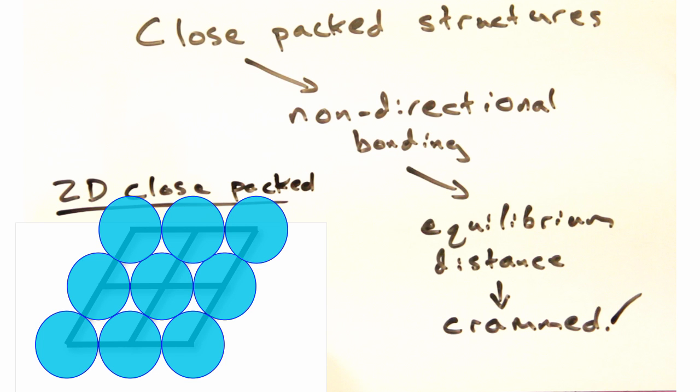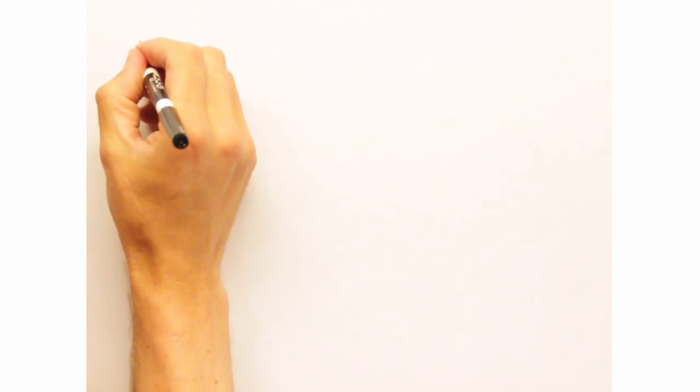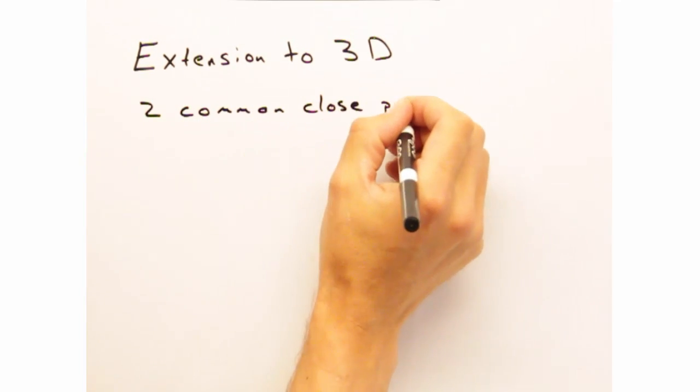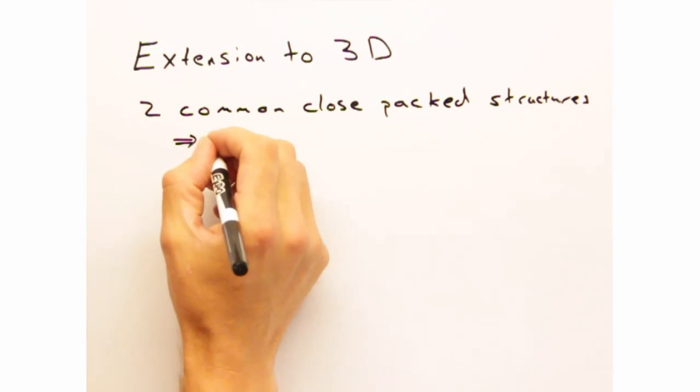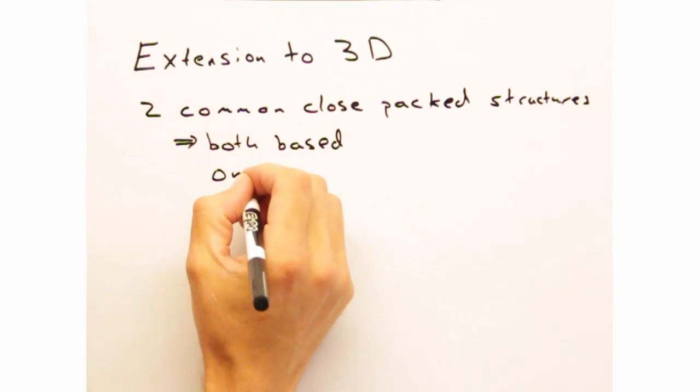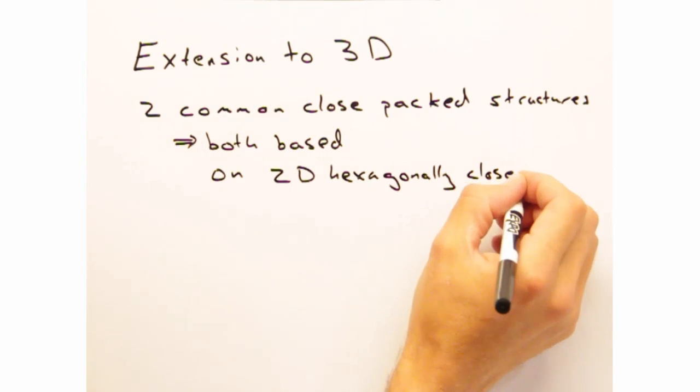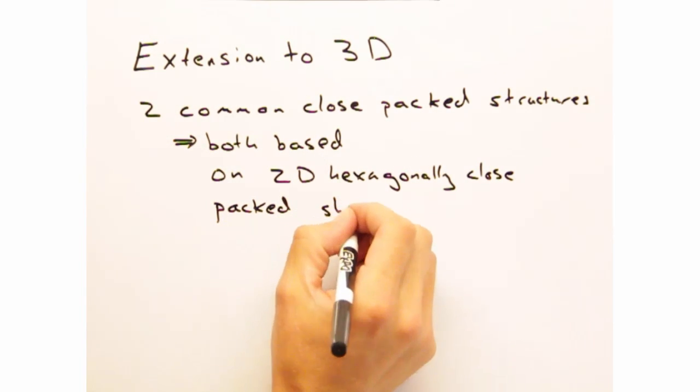So, turns out extending this concept into three dimensions is mathematically a little tricky. But the consensus in the field is that there are two different common structures that are as close-packed as you can get in 3D. They both take two-dimensional sheets of hexagonally packed spheres and lay them on top of each other.